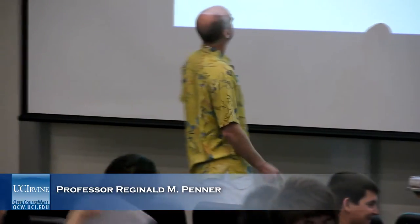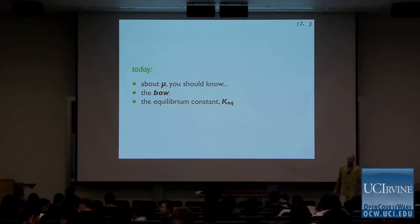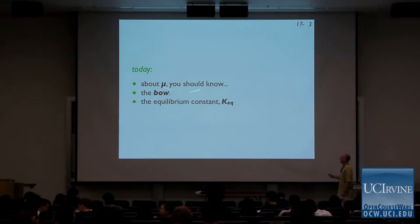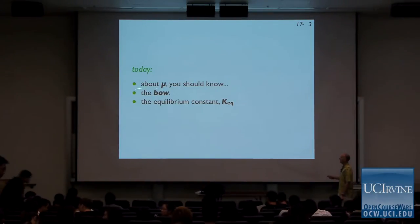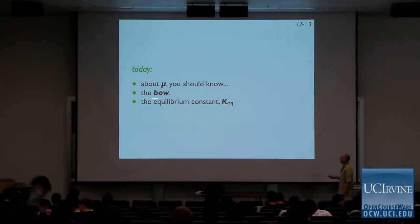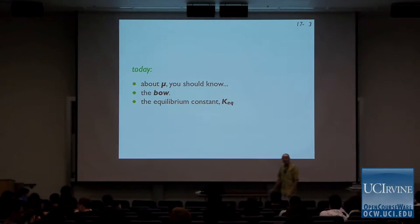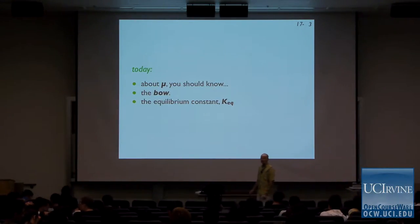We're going to be talking about equilibrium. We're going to have a little bit more to say about mu because mu is important. Then I'm going to talk about the bow and then I'm going to talk about the equilibrium constant. This is Chapter 17 material.